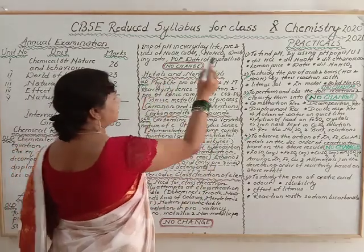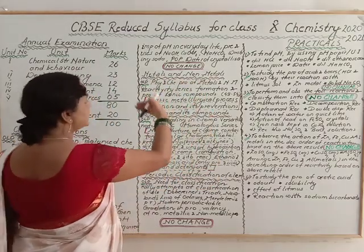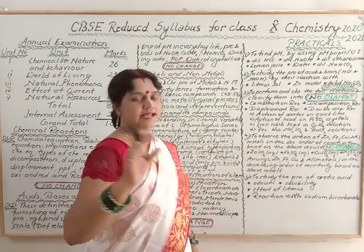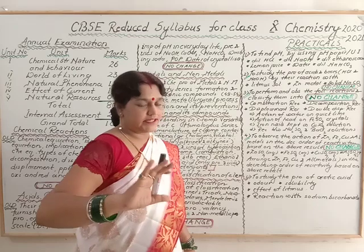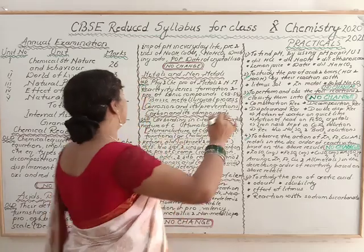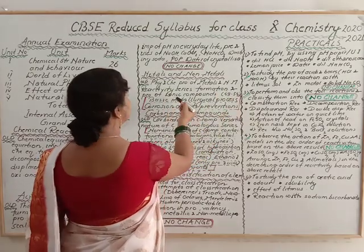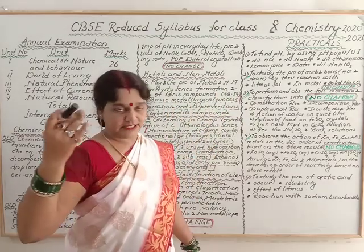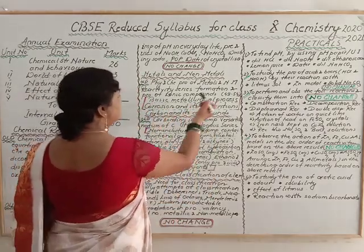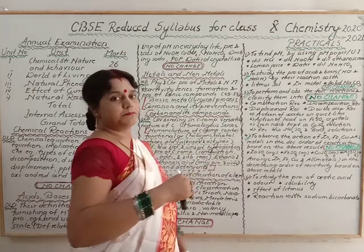Third chapter is Metals and Non-metals. The old syllabus included: physical and chemical properties of metals and non-metals, reactivity series, formation and properties of ionic compounds, basic metallurgical processes, and corrosion and its prevention.